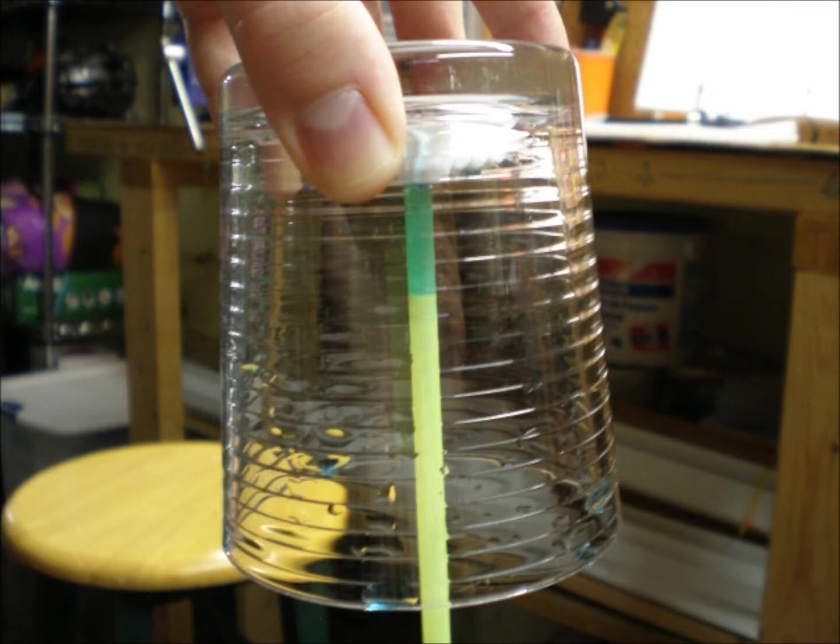The surface tension of the water in the straw is stronger than the pull of gravity, so it stays in the straw. The surface tension of the alcohol is not as strong, so the alcohol falls out.